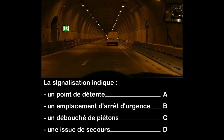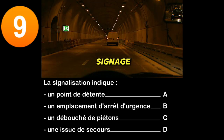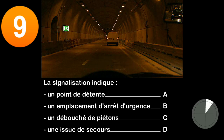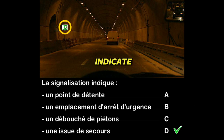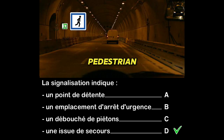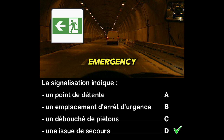Question nine: the signage indicates a relaxation point (A), an emergency stop location (B), a pedestrian outlet (C), or an emergency exit (D)? The green sign does not indicate a relaxation point, emergency stop location, or pedestrian outlet. It signals an emergency exit to the left.